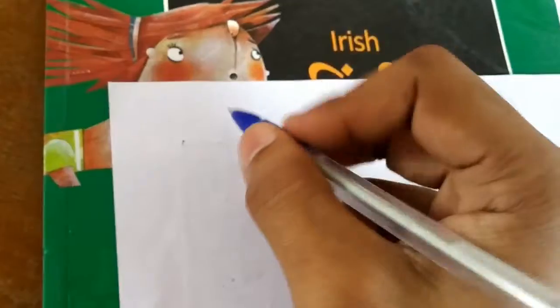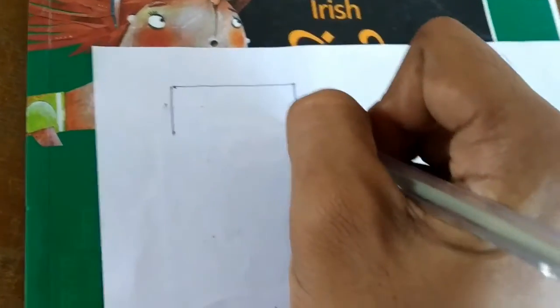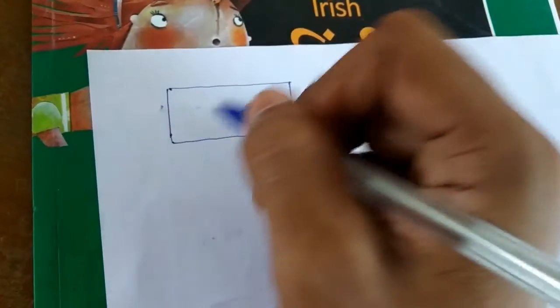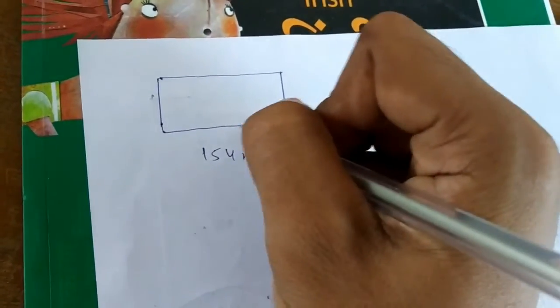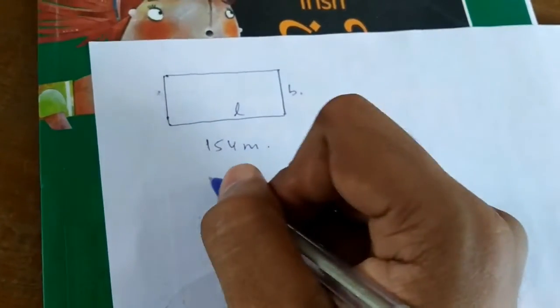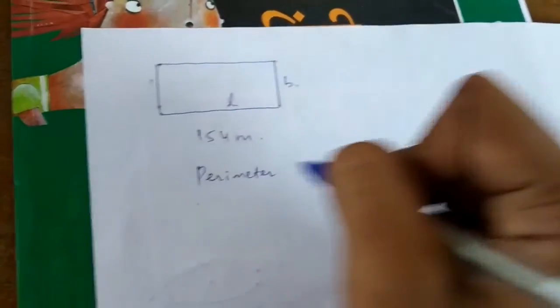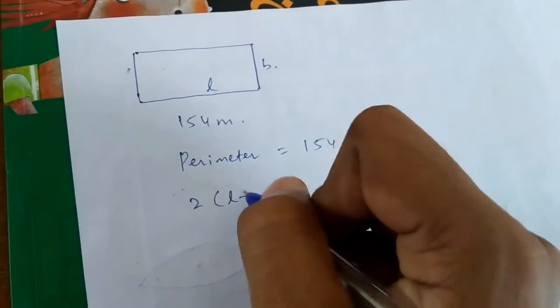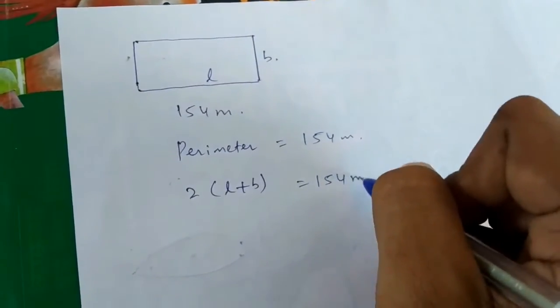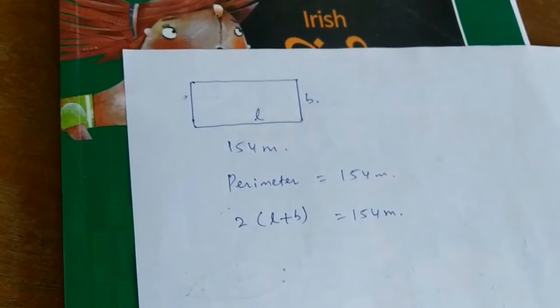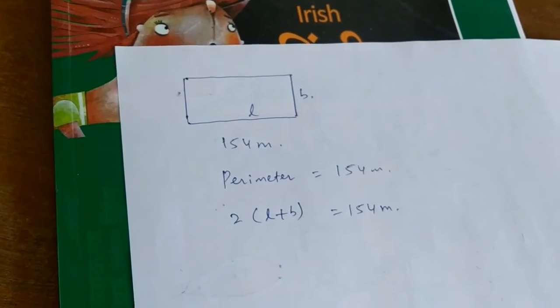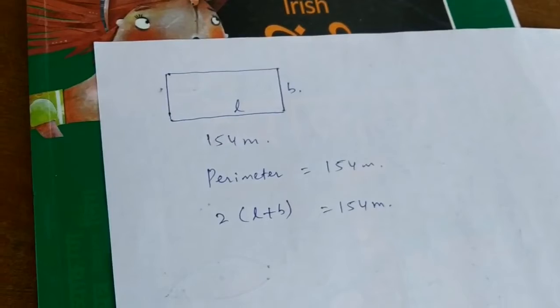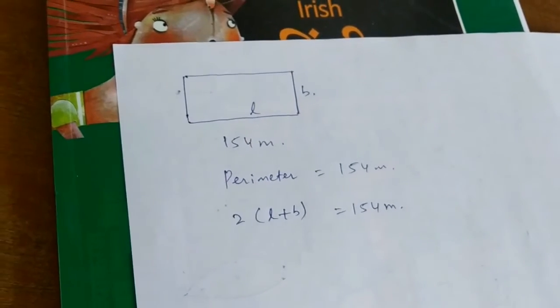Question number 2: The perimeter of a rectangular swimming pool is 154 meters.